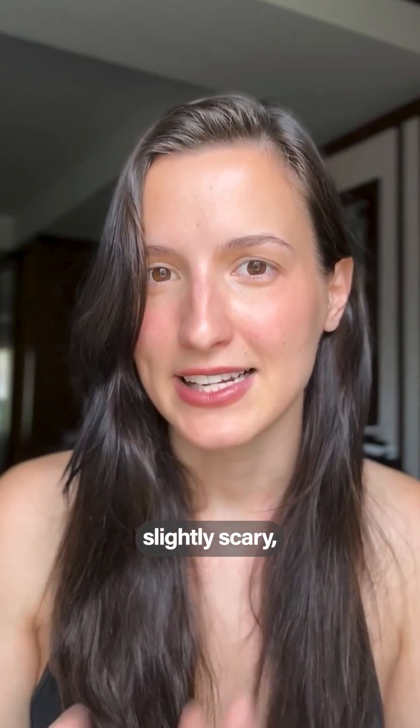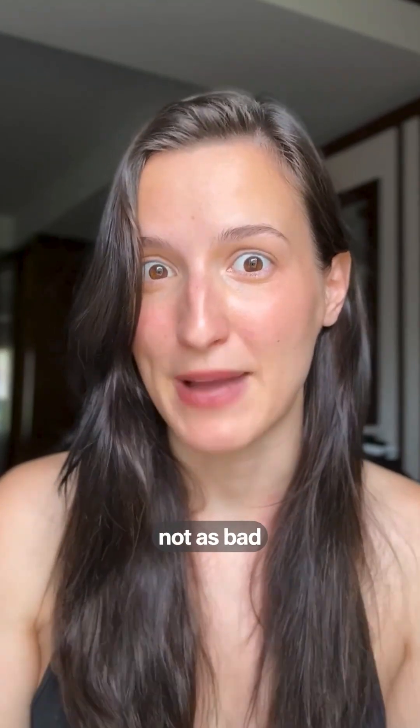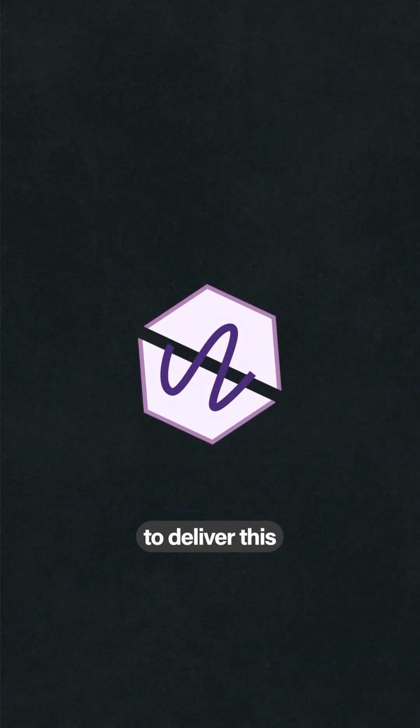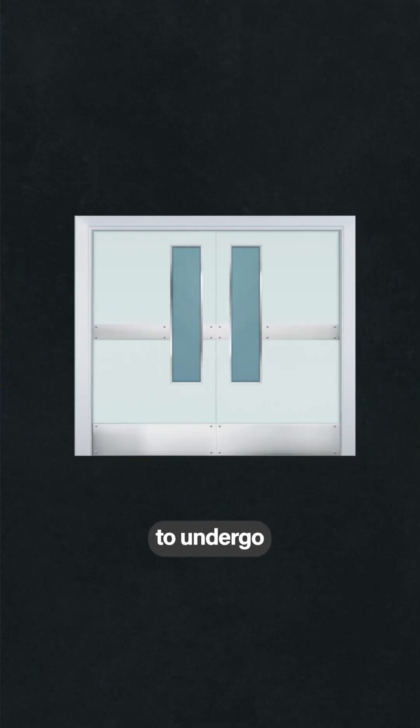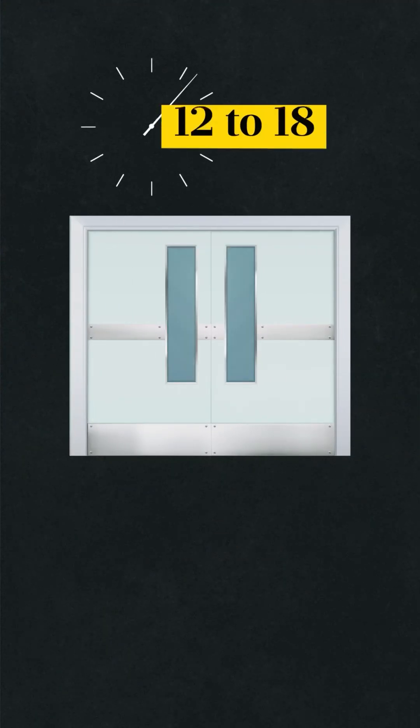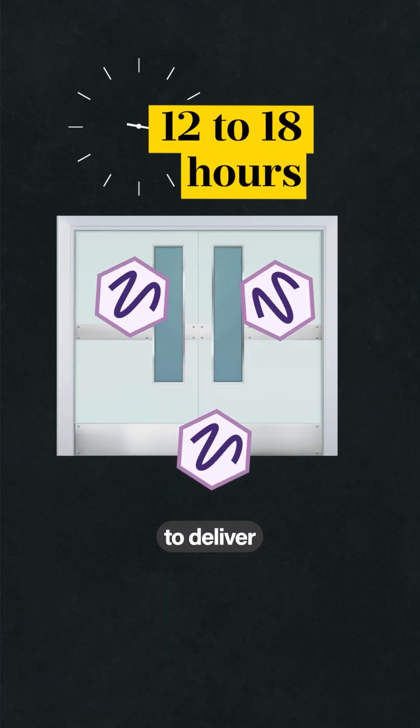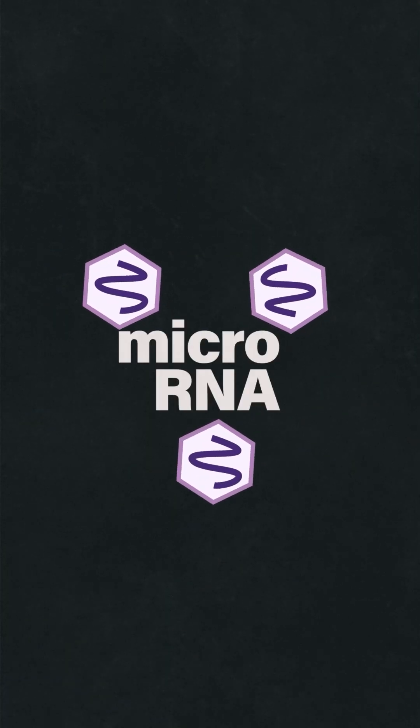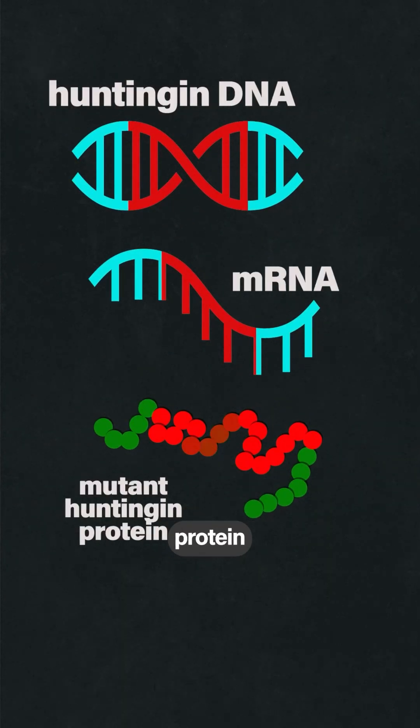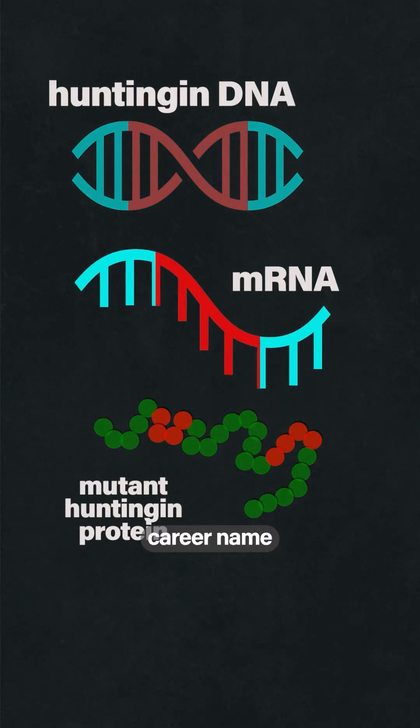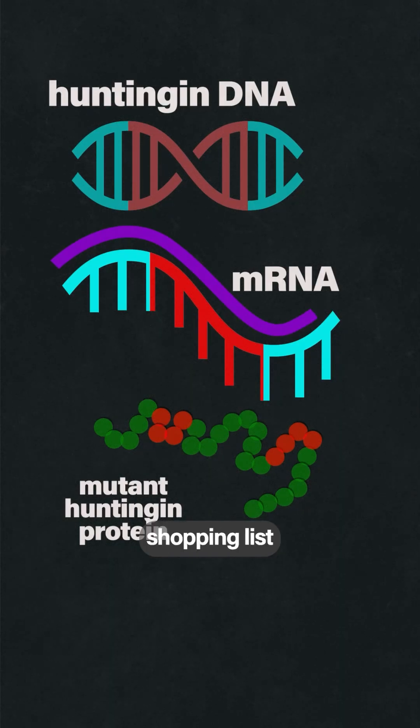This next part is going to sound slightly scary, but I promise you it's not as bad as you think. In order to deliver this gene therapy, you need a very good postman. Patients needed to undergo surgery for anywhere from 12 to 18 hours in order to deliver a type of microRNA that is able to find the messenger RNA of Huntington protein and target it for degradation. This type of microRNA just snatches your shopping list and then you end up not making it at all.